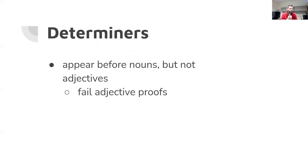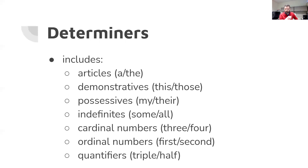Let's talk about some different categories. Determiners — this might be a new word for you, but it includes things like articles, which you're already familiar with. Determiners appear before nouns but they're not adjectives; they'd fail almost every adjective test. Determiners include articles like 'a' and 'the,' demonstrative determiners like this, these, those, and that, possessives like mine, your, and theirs, indefinites like some or all, cardinal numbers, ordinal numbers like first and second, and quantifiers like tripling, halfing, or a quarter.